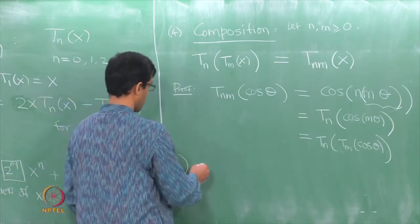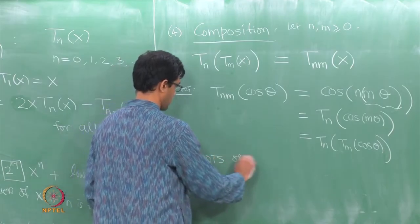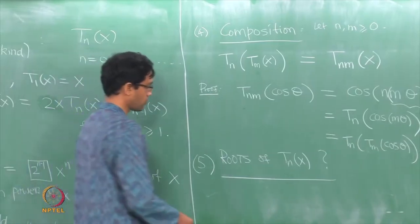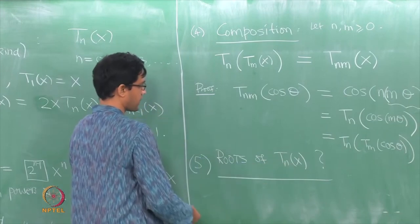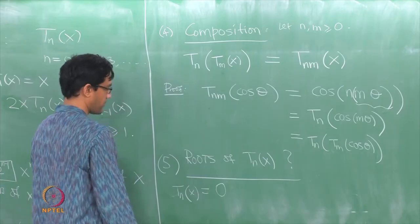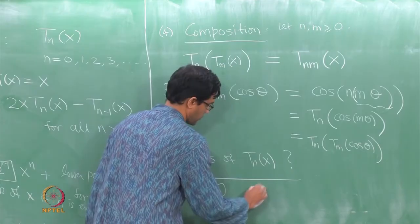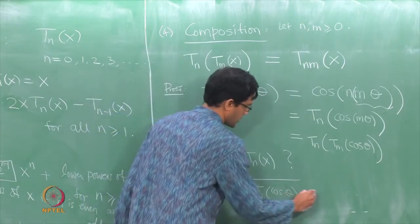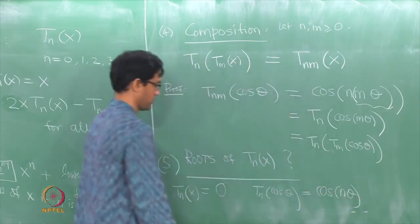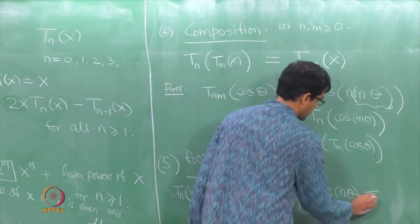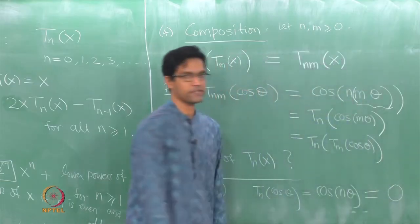Here is the final property — what are the roots of T_n? To find the roots, we ask: for what values of x does T_n(x) equal 0? Let us plug in x equals cos theta to get a natural handle on the problem. T_n(cos theta) by definition is cosine of n theta. So the question becomes: for what values of cos theta would cos(n theta) be 0? We know exactly when cosine becomes 0.